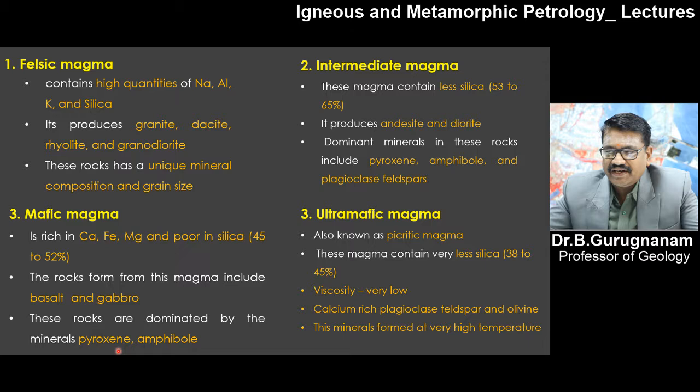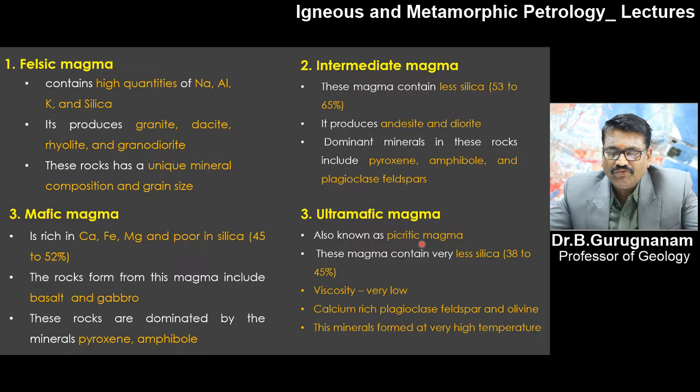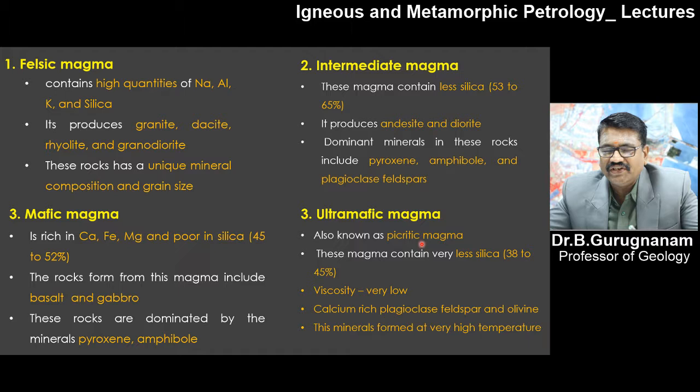These mafic rocks are dominated by minerals like pyroxene. Ultramafic magma has very low silica — silica percentage is 38 to 45%. We have to keep in mind what the end product is from felsic to ultramafic. This magma is also called picritic magma. Picritic magma is nothing but ultramafic magma, which has very low silica content.